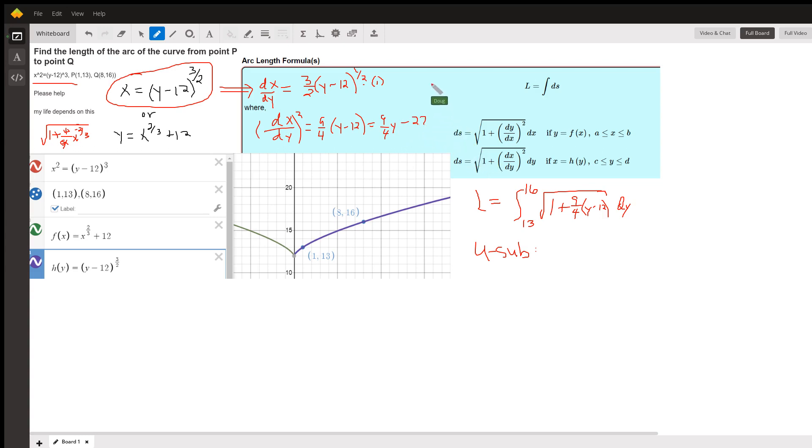And that's what goes into the formula. L equals the definite integral. Since we're integrating along the y axis, we will be going from 13 to 16. That's these y values right here, of the square root of 1 plus this expression right here. And that really is just 9 fourths y minus 26. So let me take away that 1. 9 fourths y minus 26.